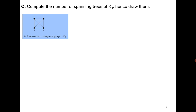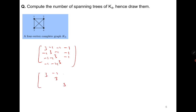Using the Matrix Tree Theorem, compute the number of spanning trees of K4, and then as an exercise try to draw all of them. The Laplacian is easy to write: each vertex has degree 3, so the diagonal entries are all 3 and all off-diagonal entries are minus 1. Delete the first row and first column, and compute the determinant of the resulting matrix — it comes out to be 16.